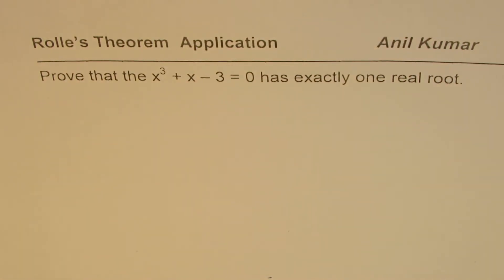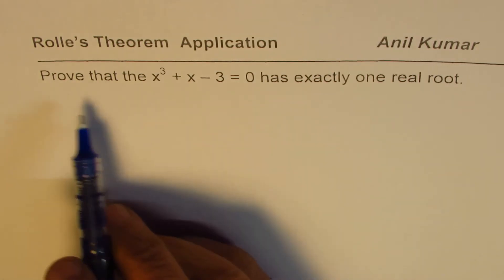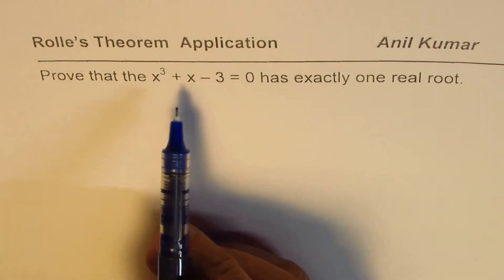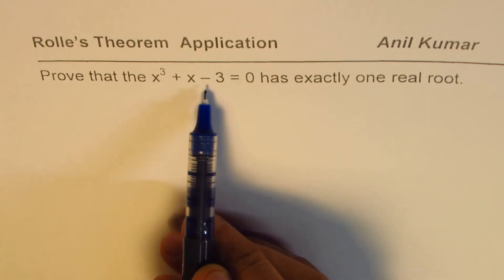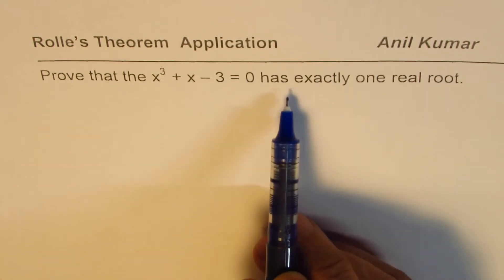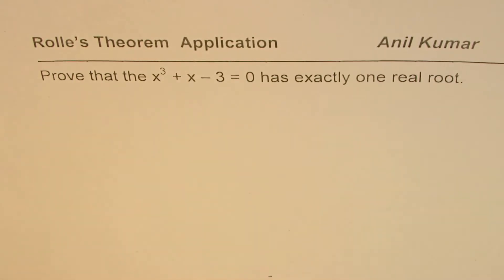I'm Anil Kumar and here is an application of Rolle's theorem. Prove that the equation x cubed plus x minus 3 equals to 0 has exactly one real root.